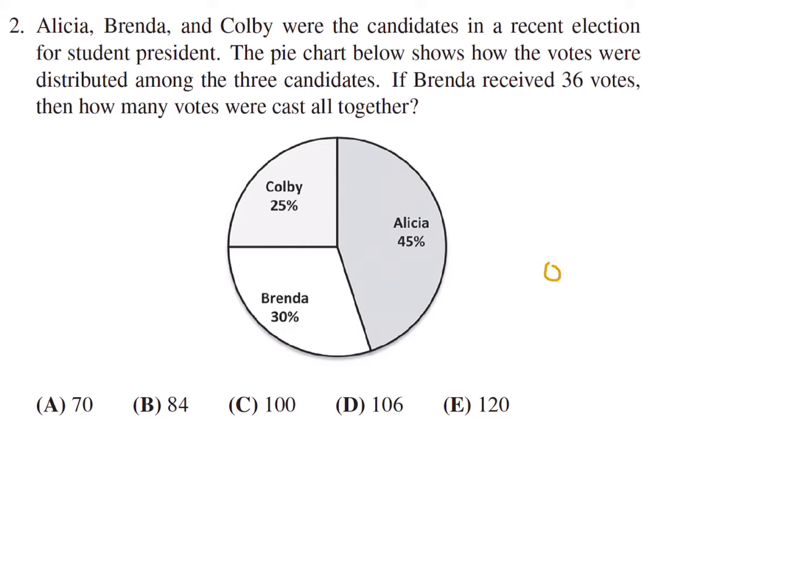Well, 0.3, which is Brenda, multiplied by the total number of votes, let's say that's X, is equal to 36. So this is what we will have to calculate. Therefore, X is 36 divided by 0.3, and that means X is equal to 120. So a total of 120 votes were cast. That means number 2, the answer is E.